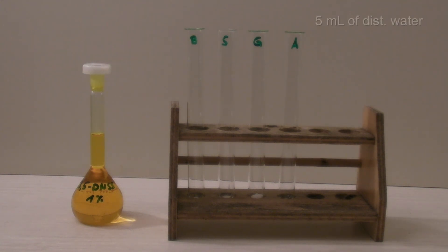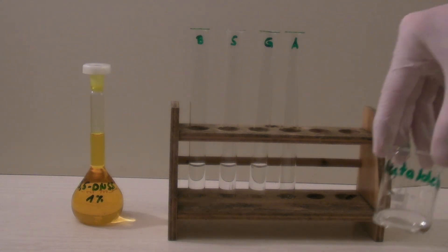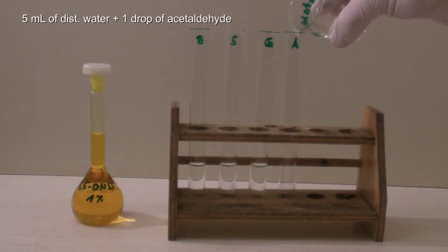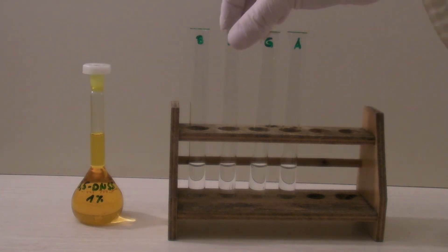Then, 5 milliliters of distilled water were added to each test tube. To the last one, 5 milliliters of distilled water containing a drop of acetaldehyde were added. The tubes were shaken to dissolve the sugar.